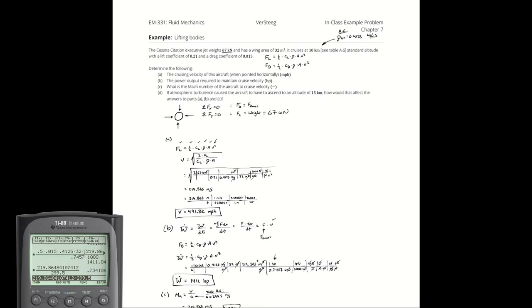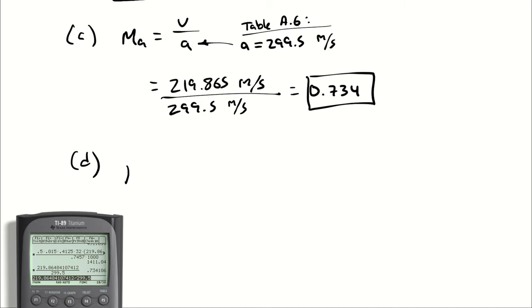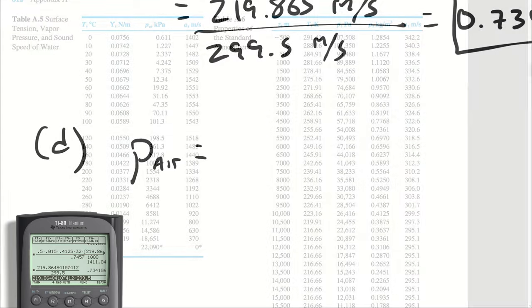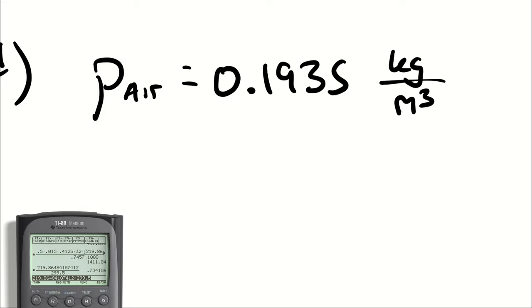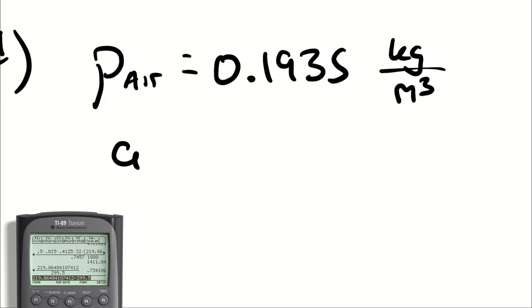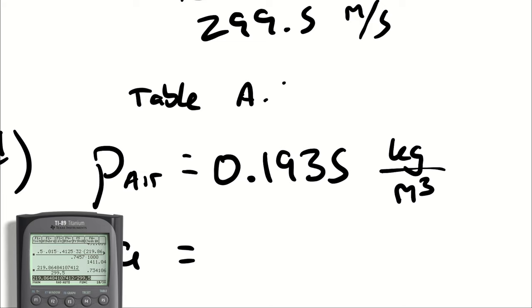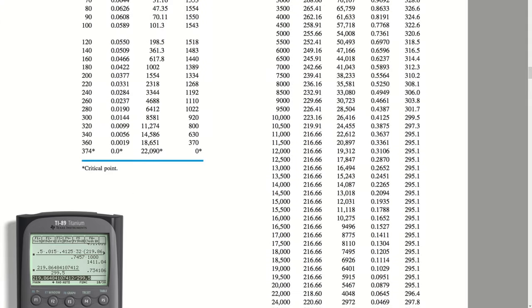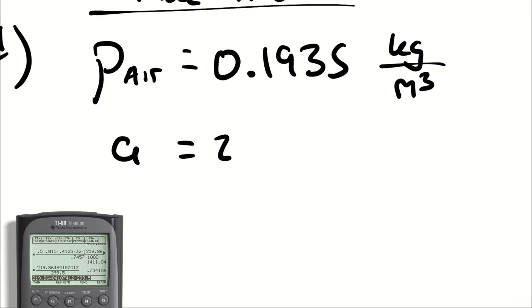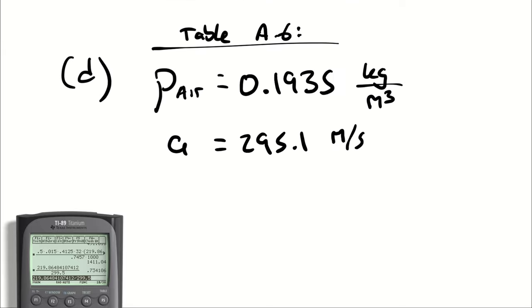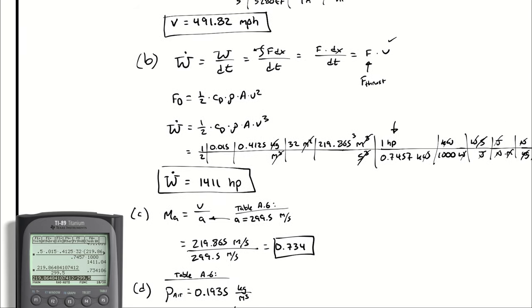Part D asks if we went to 15 kilometers, how would that affect A, B, and C? At 15 kilometers our density is now 0.1935. Furthermore, our speed of sound is going to be 295.1, so not particularly different. With those two numbers I can recalculate A, B, and C. I will do that by writing out the velocity, the work, and the Mach number, and we can just rerun our calculations.